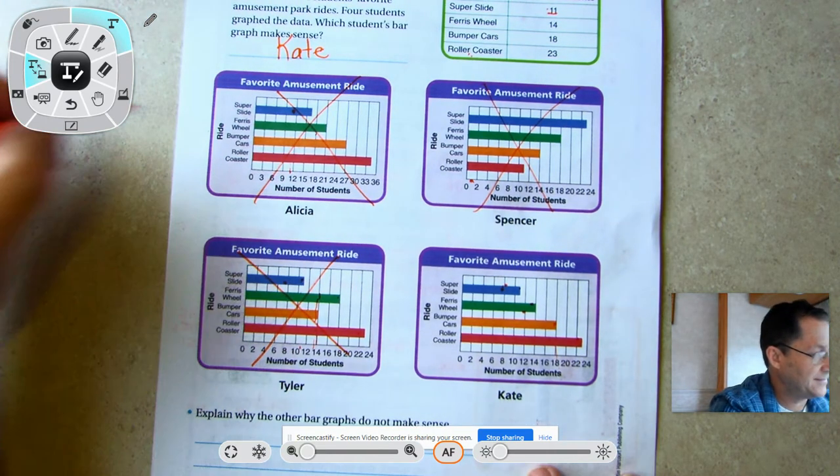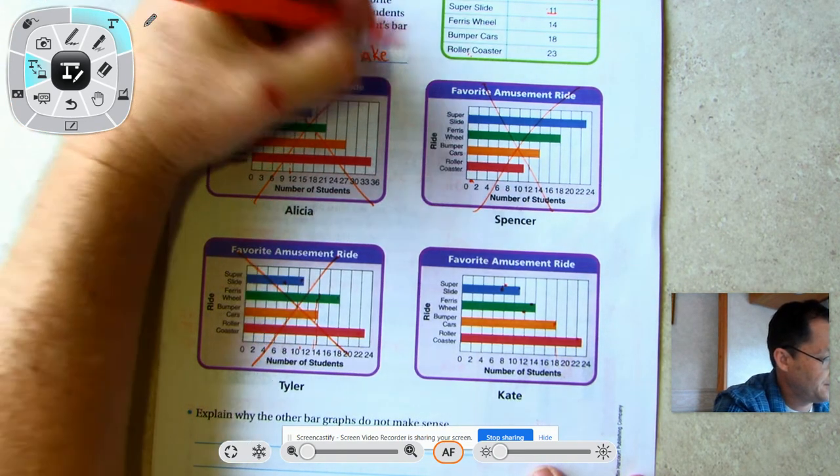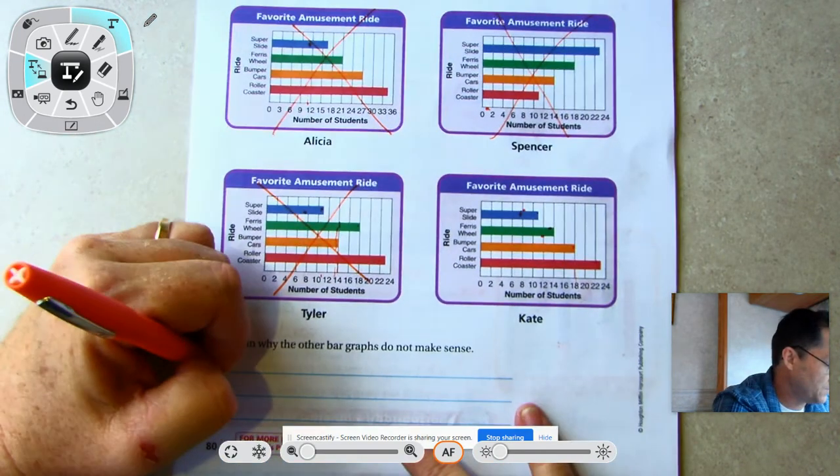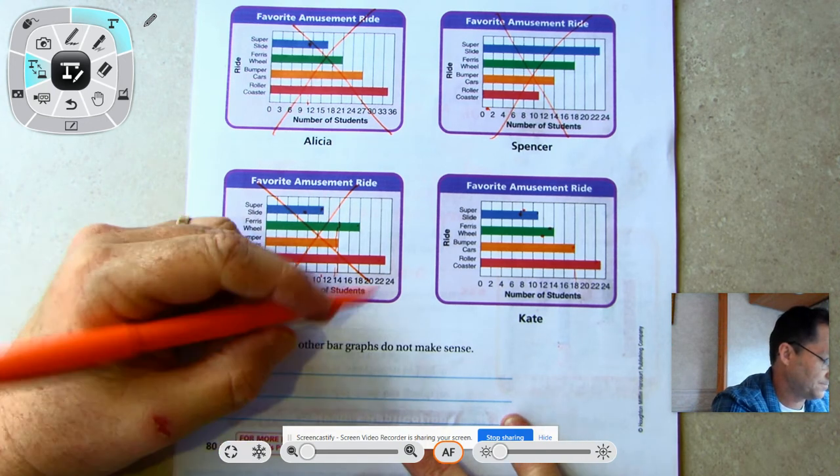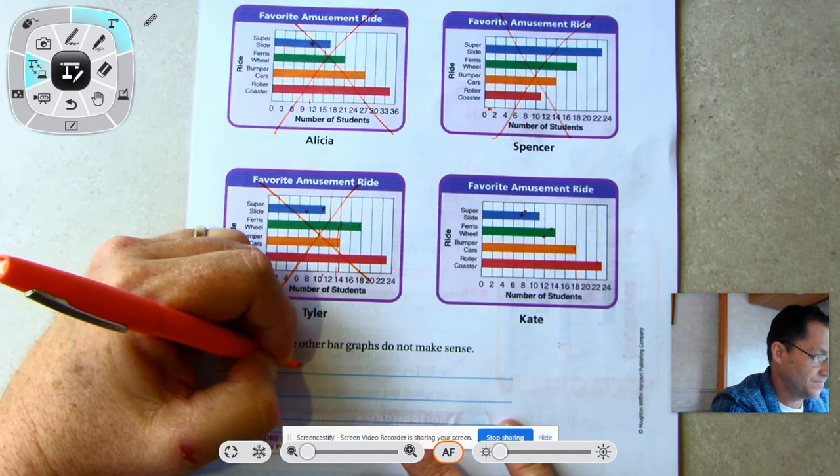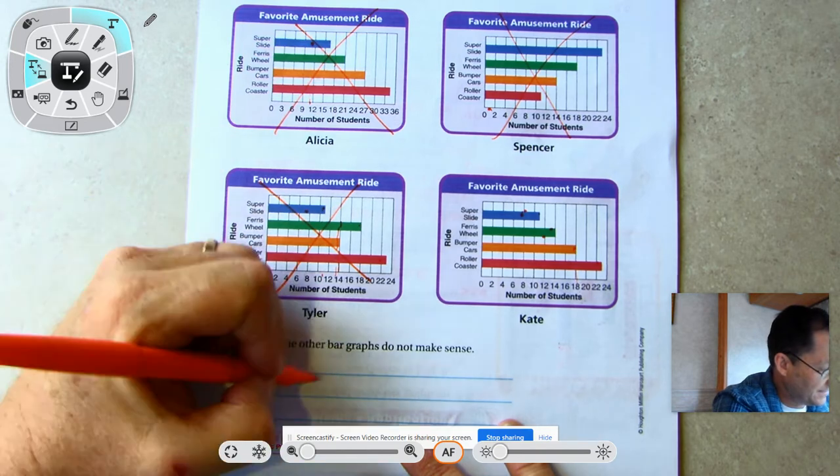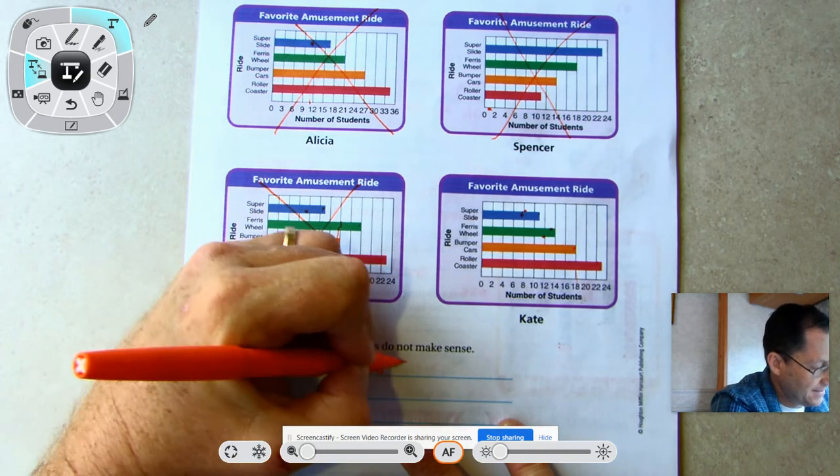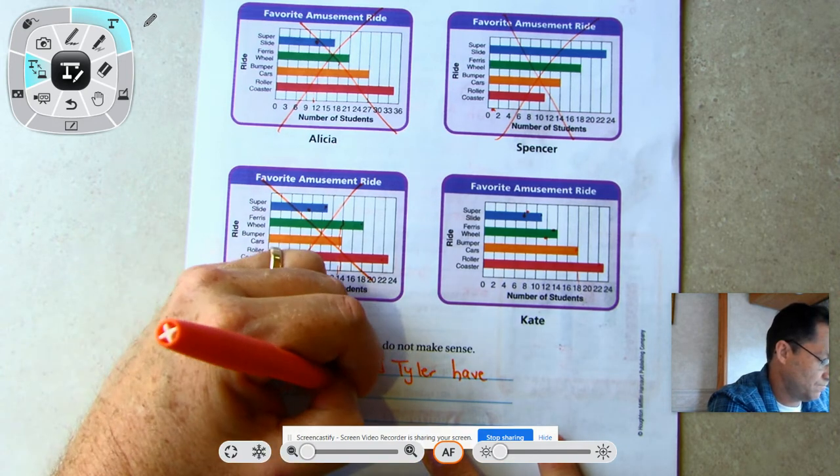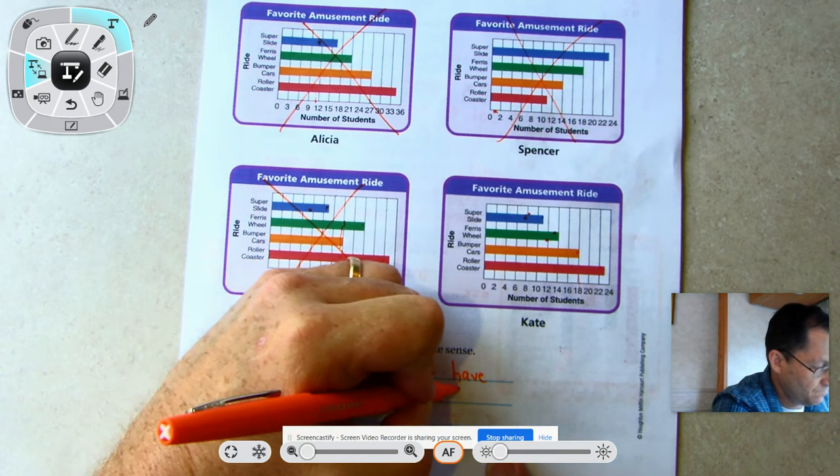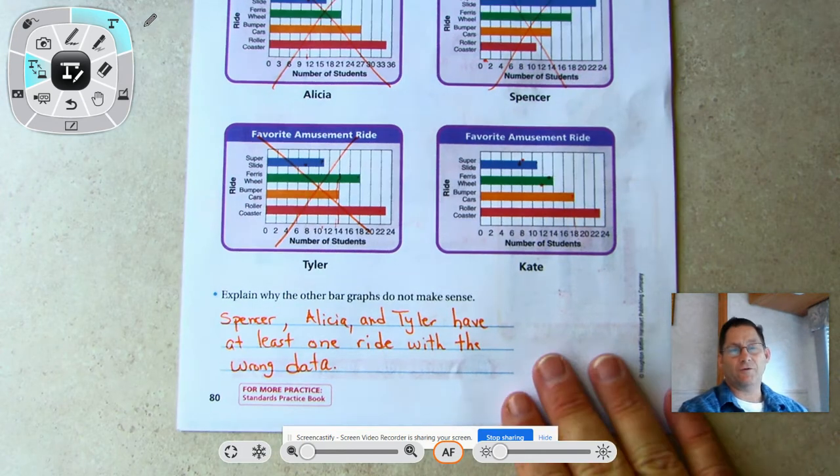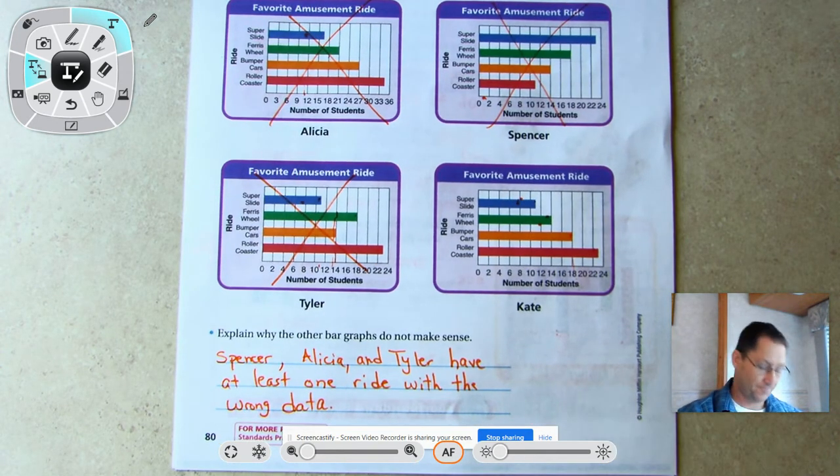Explain why the other bar graphs do not make sense. Spencer, Alicia, and Tyler - at least one of the rides was recorded incorrectly on those three graphs.